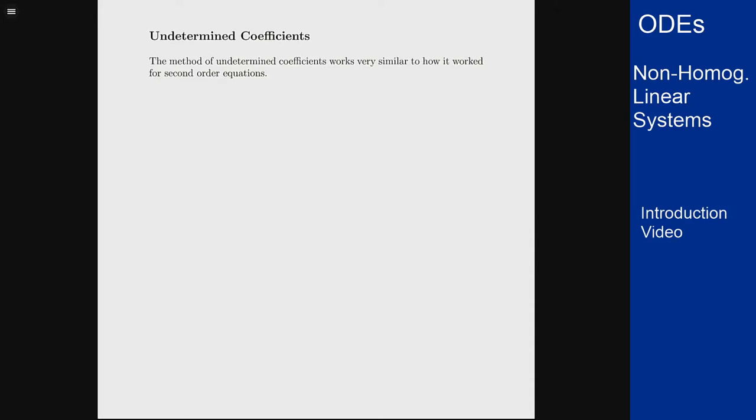In this video we'll talk about the other two methods for solving non-homogeneous linear systems. Undetermined coefficients is another approach and it works basically the same way as it did for second order equations. The idea is we're going to guess the form of the solution